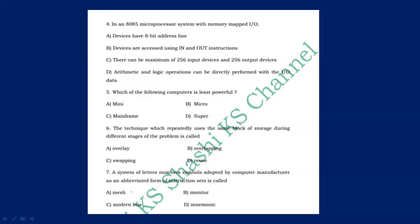Question: which of the following computers is the least powerful? The order of powerfulness is: supercomputer, mainframe computer, minicomputer (used from the 1960s to 80s with limited functionality), and microcomputer — which includes desktops, laptops, and PDAs. So for the least powerful, the answer is microcomputer.